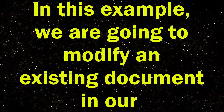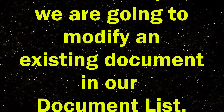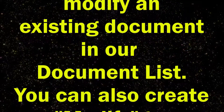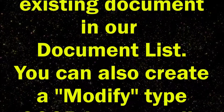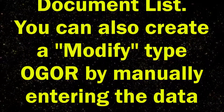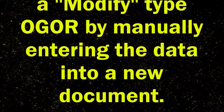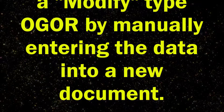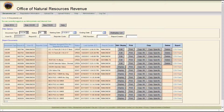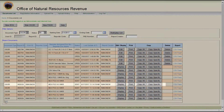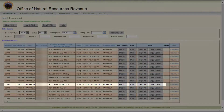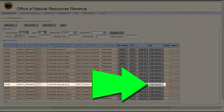In this example, we are going to modify an existing document in our document list. You can also create a modify type OGOR by manually entering the data into a new document. First, you must find your previously submitted OGOR in your documents list. Once you find the OGOR that you want to modify, go to that line and click on Copy Specific.